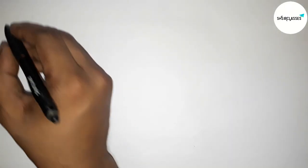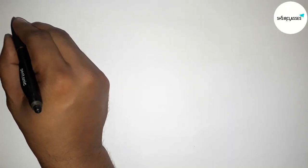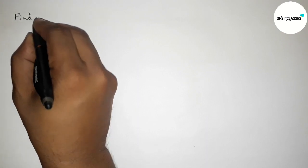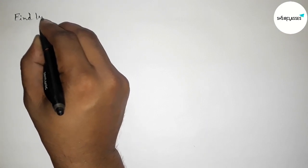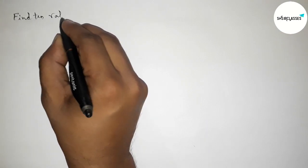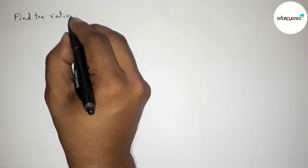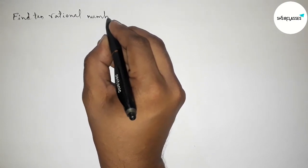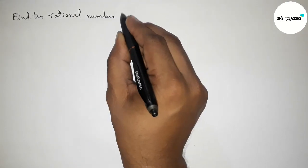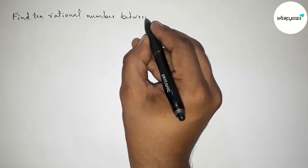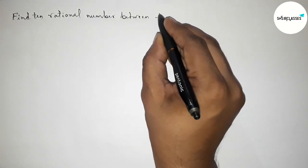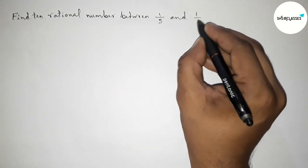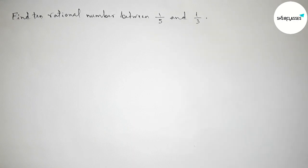Hi everyone, welcome to SI Share Classes. Today in this video we have to find 10 rational numbers between 1/5 and 1/3 in an easy way. Please watch the video till the end. Let's start.